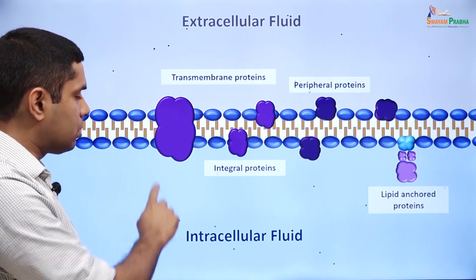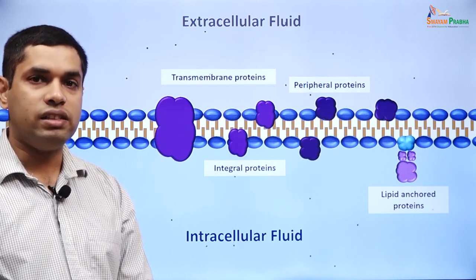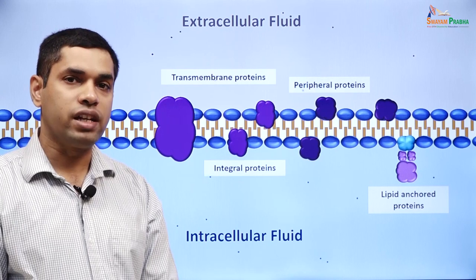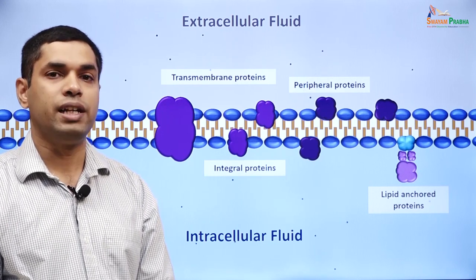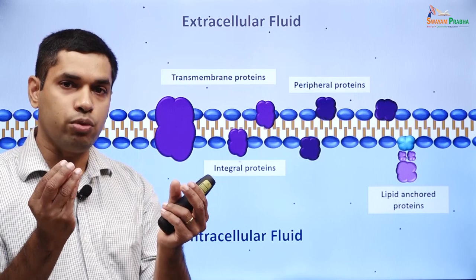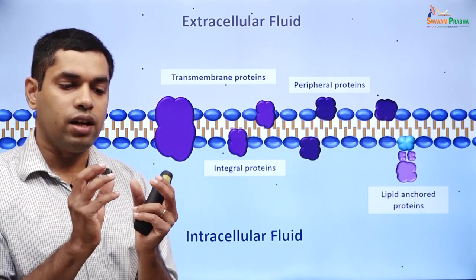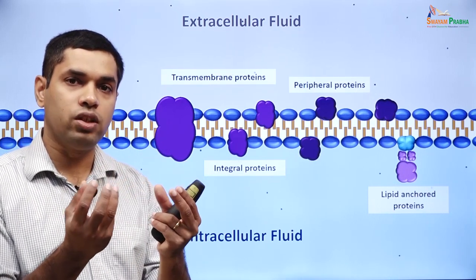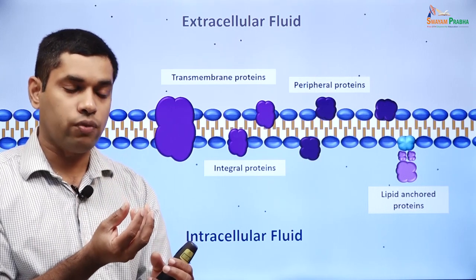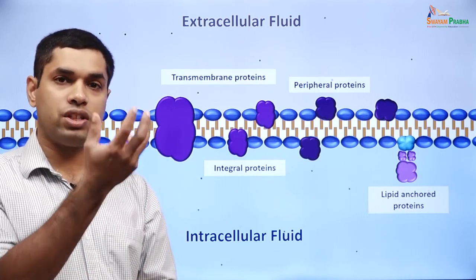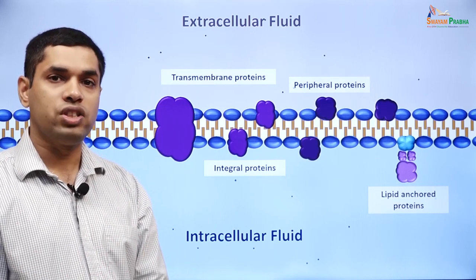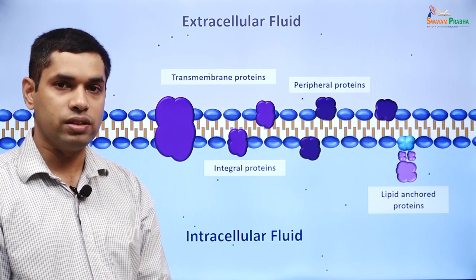This is important because ion channels are transmembrane proteins. Ion channels are proteins made up of many subunits. Each of these subunits together will surround a central pore, which can be thought of as a channel through which ions pass. So ion channels are transmembrane proteins.